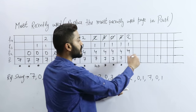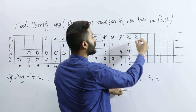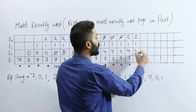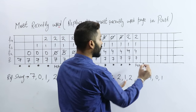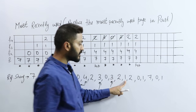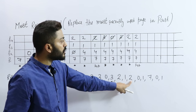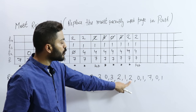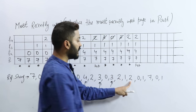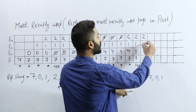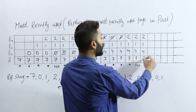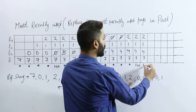Then page number 1 — is page number 1 present? Yes, it is already present — that is a page hit. Next, page number 2 — is page number 2 present? Yes, page number 2 is already present — that is again called a hit.